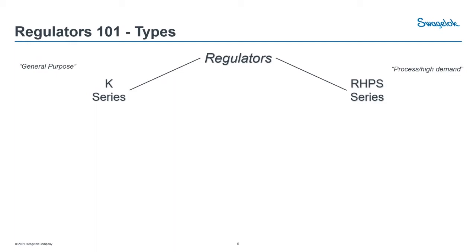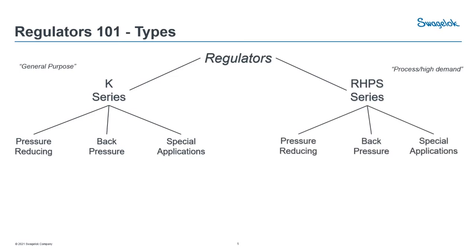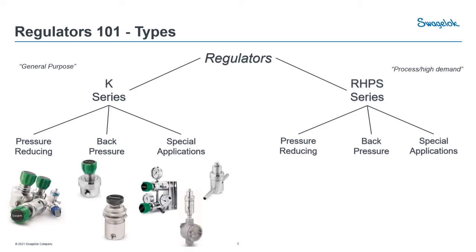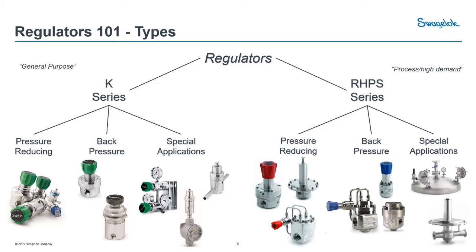With both series, you're generally going to see the same different types of regulators: pressure reducing and back pressure, plus special applications. In the K-series, you've probably seen the green handles. On the special application side you can run into things like a changeover regulator panel, and we also sell vaporizers that can be steam or electric powered. The RHPS series has the same types — the standard pressure reducing is noted with a red handle and back pressures with a blue handle. These models are generally larger due to the higher demand process lines they're installed in. Special applications include tank blanketing or sanitary. For this presentation, we'll use the K-series pressure reducing model to run through all our examples.